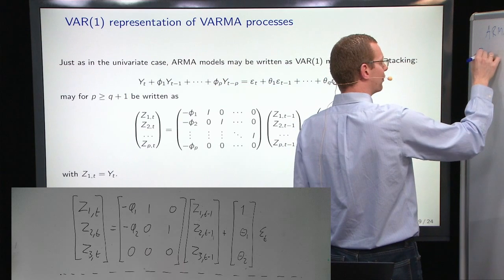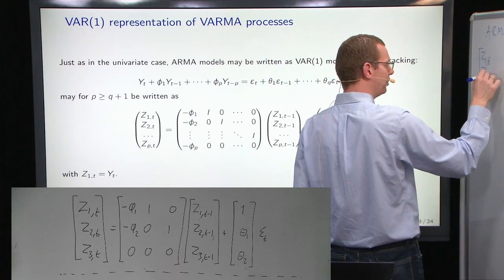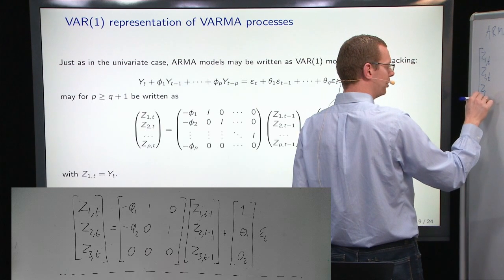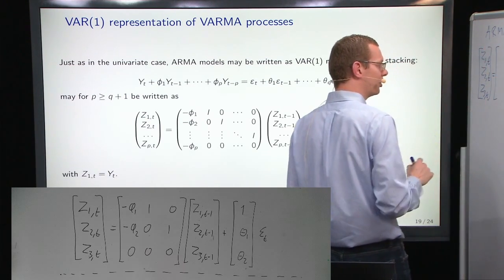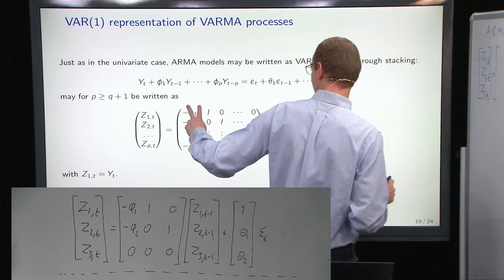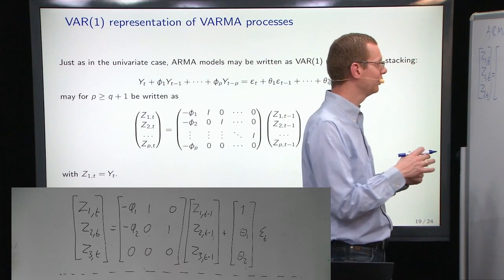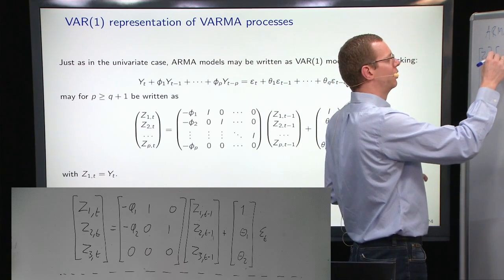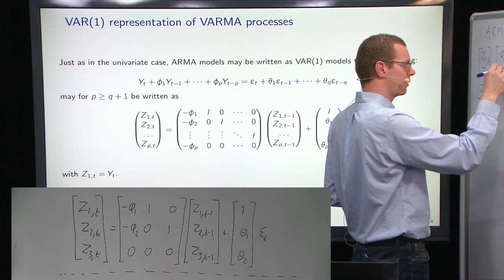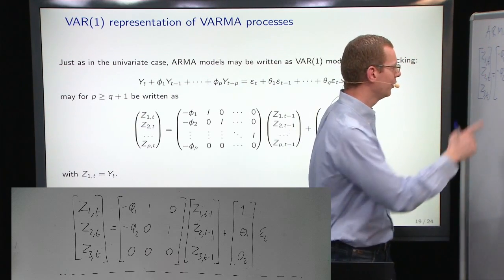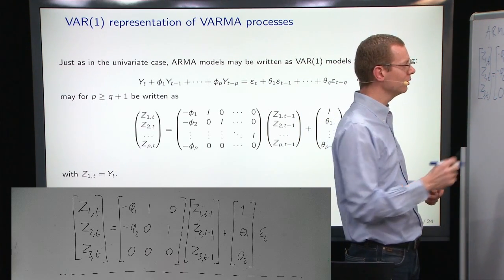So, you have z1,t, z2,t, z3,t, equal to a matrix that, in the first column here, or columns, but the column of matrix coefficients contains minus the AR coefficients. Since it's an AR(2) model, then we only have two coefficient matrices. So, the third one here will be a zero.